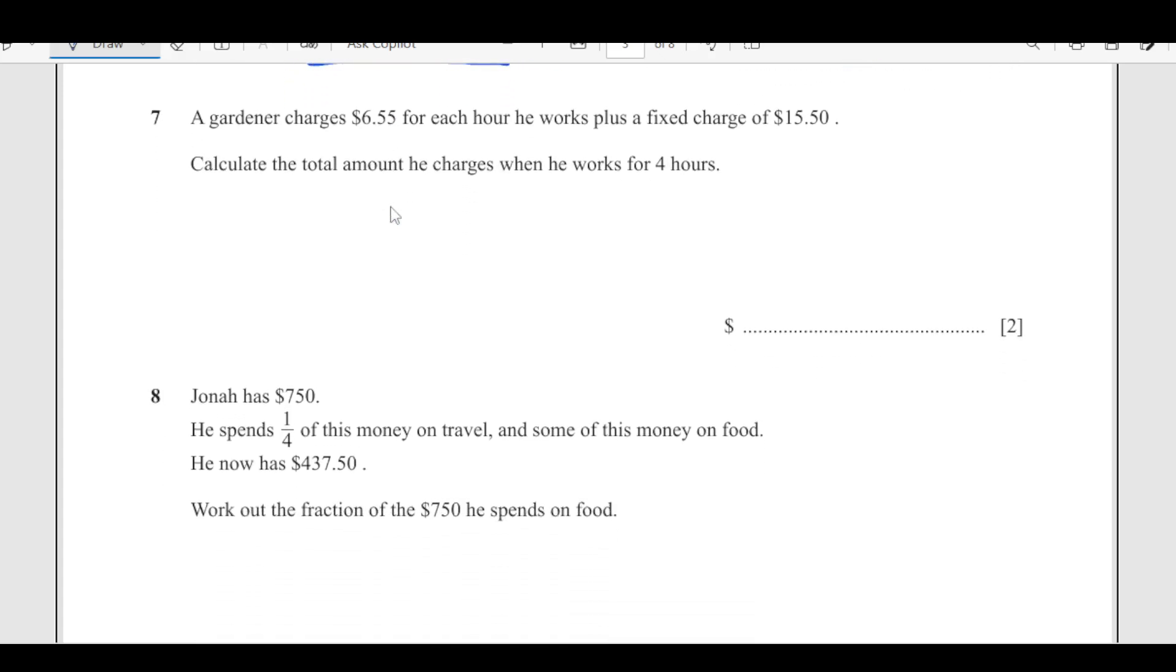Number 7, a gardener charges $6.55 for each hour he works plus a fixed charge of $15.50. Calculate the total amount that he charges when he works for 4 hours. This is the fixed charge $15.50 plus he charges per hour $6.55, he is working for 4 hours, so that is 4 times $6.55. This comes out to be $41.70.